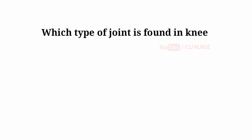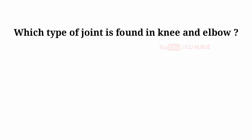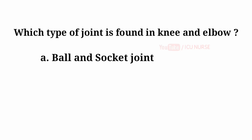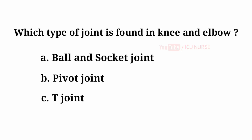Which type of joint is found in knee and elbow? A. Ball and socket joint, B. Pivot joint, C. T joint, D. Hinge joint.